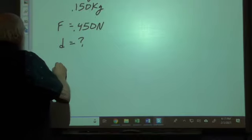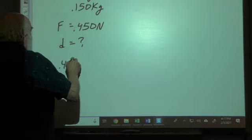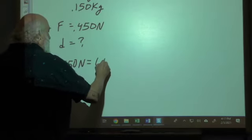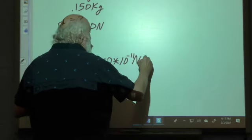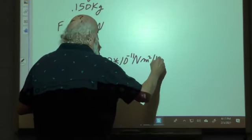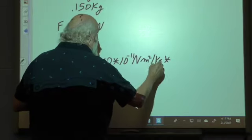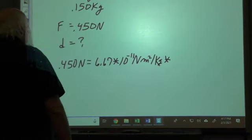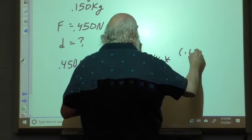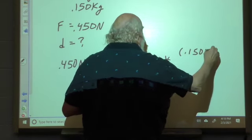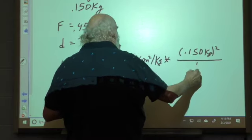So F is 0.450 newtons equals G, 6.67 times 10 to the negative 11 newtons meters squared per kilogram squared, times the masses. We have 0.150 kilograms, so they're going to square, over d squared.